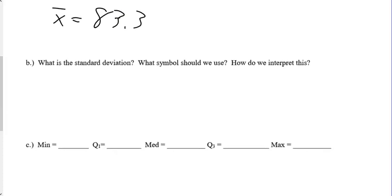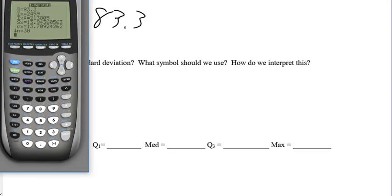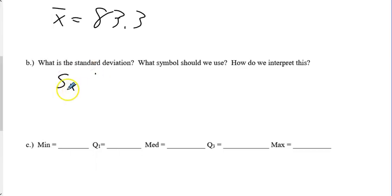What's the standard deviation? And what symbol should we use and how do we interpret this? Well, remember, we talked about this before. We have SX and then we have that little Greek letter sigma. Since we're sampling our population, this is not all the stats people in the world or anything in the school. If it's a sample of that class, we're going to use SX. Notice, we're pretty close. 13.9, 13.7. Not a big deal. We're going to go with SX and go with 13.9. Okay, so that's the symbol we use.